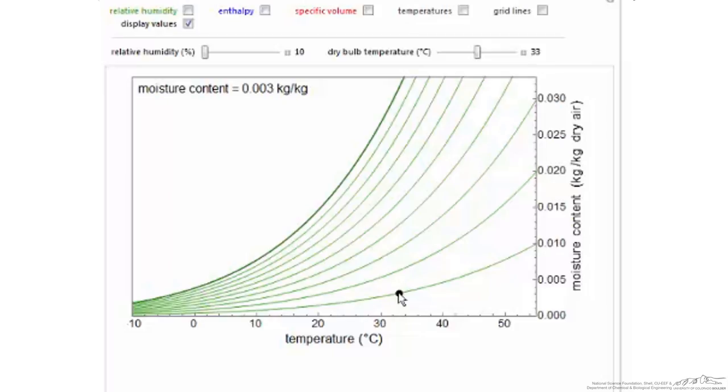We will start with the basics. I've hidden many of the lines on the chart initially so it's not too intimidating to read values. The x-axis of the chart is the dry bulb temperature and the y-axis, which is on the right side of the screen, is the absolute humidity or moisture content.